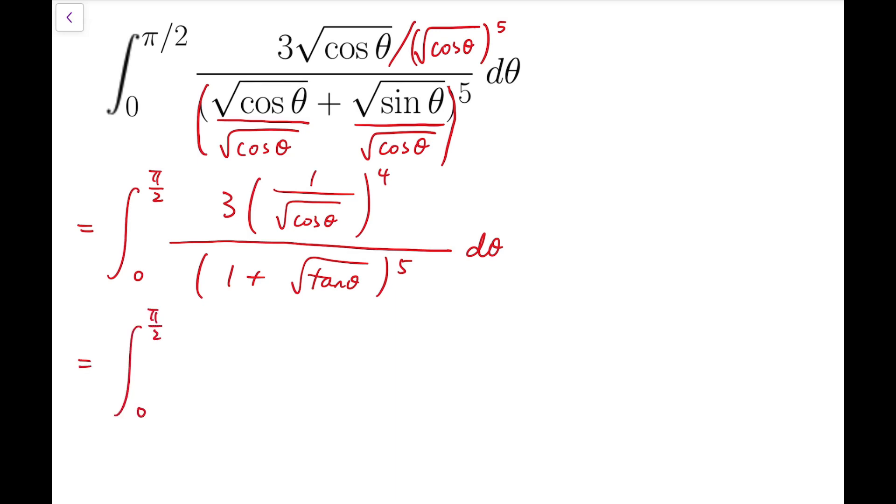Further simplifying, I will have sec²θ dθ over (1 + √tan θ)^5. That's the reason I chose to divide both entries of the fraction by the 5th power of √cos θ, so that I can have just only one trigonometric function at the denominator, while the numerator is exactly the derivative of tangent, so that I can use some useful substitution to further simplify this integral.